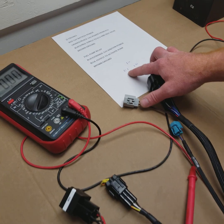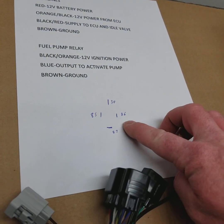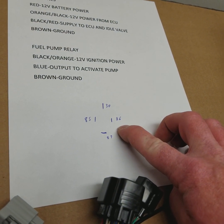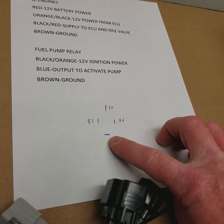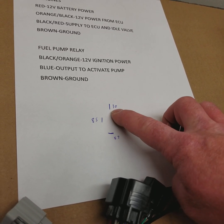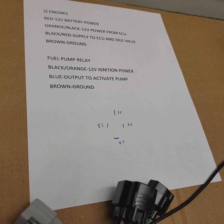You've got 12 volts going into pin 85. The ground is on 86. That turns the relay on. Then power transfers from 87 to 30, which is going to energize the ECU and the idle motor.